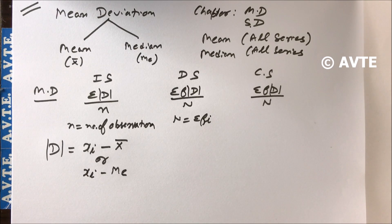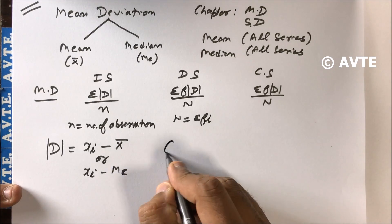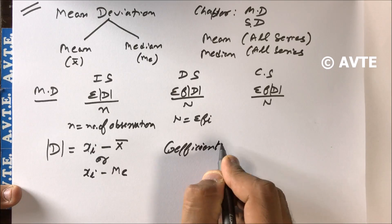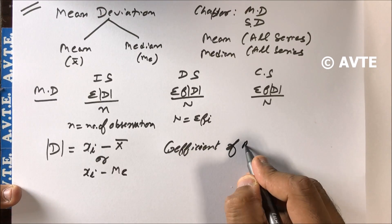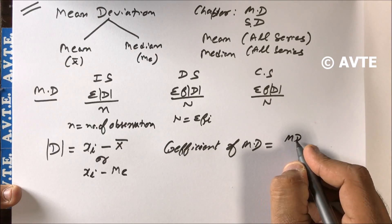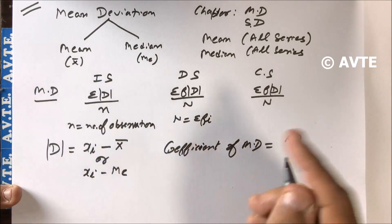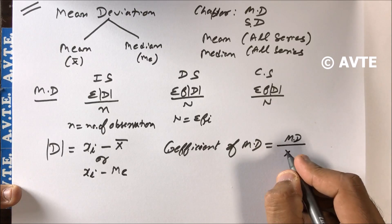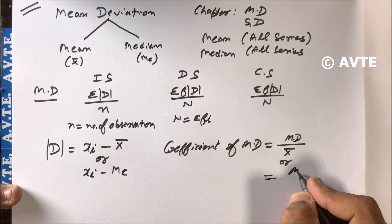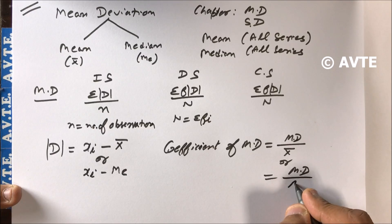You know how to find mean and you know how to find median. Before going to the examples, let me tell you how to find the coefficient of mean deviation. That is: mean deviation answer divided by either the mean, or mean deviation answer divided by the median, depending on which you are computing from.